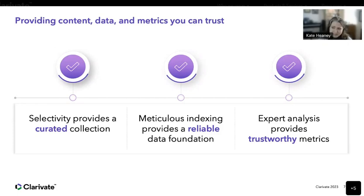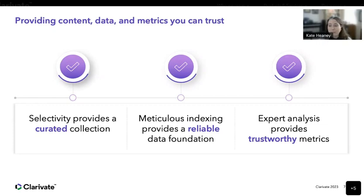We curate our data through standardization of author names and affiliations, including addresses for improved unification and aggregation, and standardization and consistency of document types across more than 21,000 journals. And lastly, we curate our metrics. We suppress journal impact factors for journals if we detect citation anomalies that result in a journal impact factor that doesn't accurately reflect the journal's contribution to the scholarly network.